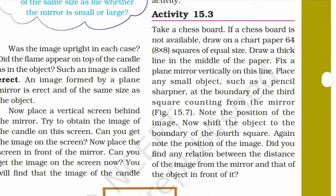Was the image upright in each case? Did the flame appear on top of the candle, as in the object? Such an image is called erect. If you look at the mirror in front of the candle, you can see the image in the mirror.